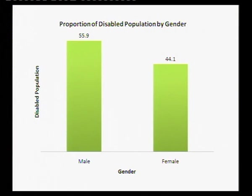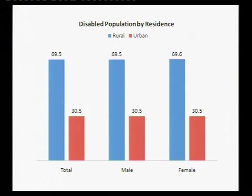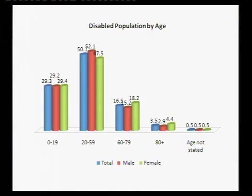If you look at the disabled population by gender, around 56% is men and 44% is women, and most are located in rural areas, which is true across gender. Looking at the disabled population by age, 20 to 59 accounts for about 50% of the disabled population in India, with about 30% in the age group 0 to 19. The census does not categorize whether disability was at birth or acquired later.